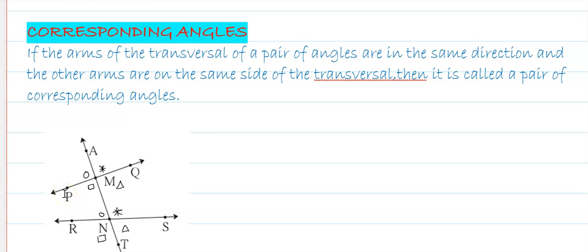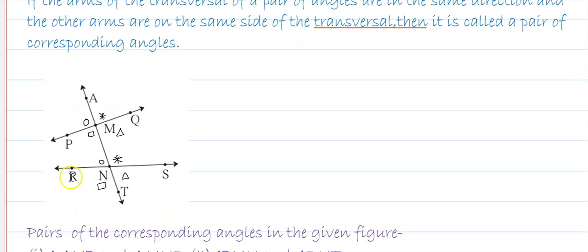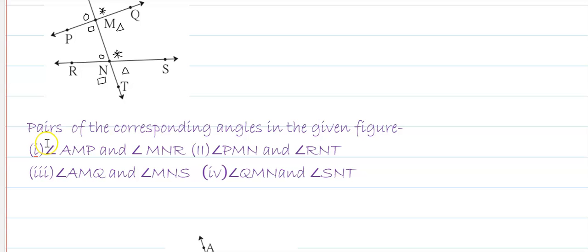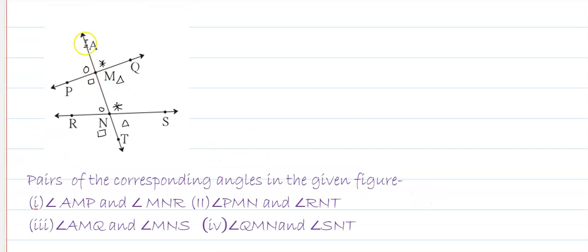Next, angle PMN and angle RNT — shown by a small square — and angle QMN and angle SNT — shown by a small triangle — are also corresponding angles. Therefore, the four pairs of corresponding angles in the figure are: angle AMP and angle MNR; angle PMN and angle RNT; angle AMQ and angle MNS; and angle QMN and angle SNT.